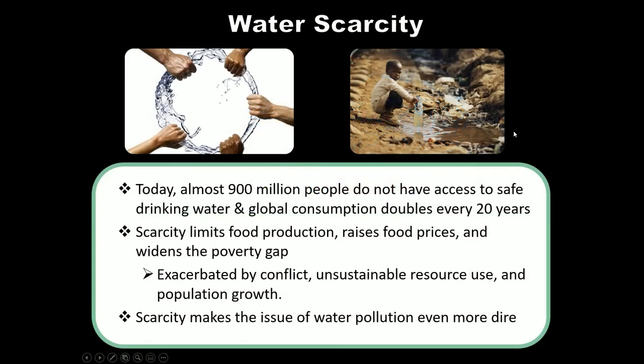Today, about 900 million people do not have access to safe drinking water, and global consumption of water doubles every 20 years — due to population growth but also lifestyle inflation. The scarcity of water limits food production, which raises food prices and widens the poverty gap. If you don't have a lot of money, the grocery bill is a significant portion of your income, so increasing food prices disproportionately affects the poorest people in society.